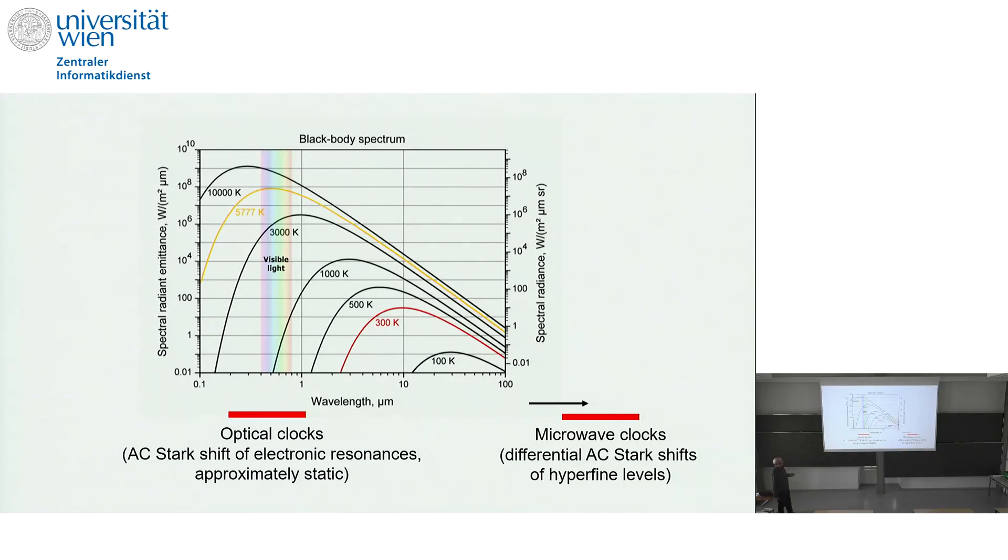If we look at the specific relevance of blackbody radiation, room temperature blackbody radiation for clocks, I'd like to show this diagram here. We know that 300 Kelvin blackbody spectrum is centered here at about 10 micron. And if we talk about clocks, well fortunately the clocks do not operate in this regime but either at higher or lower frequencies. So we heard this morning about the optical clocks operating in the visible spectrum. For them the blackbody radiation field is largely adiabatic or static - it is at a low frequency and the influence is mainly via an AC Stark shift of the electronic resonances.